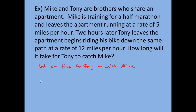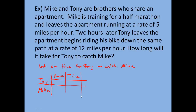I'll set this up using a chart with Tony and Mike. We'll use the formula distance equals rate times time for each of them. I'll start with rate first, then time, and then distance as my last column — because you find the distance by multiplying rate and time together. For Tony's rate, he's riding at 12 miles per hour. The time he travels is x, since we want to know how long it takes him to catch Mike. So the total distance for Tony is 12 times x, which is 12x.